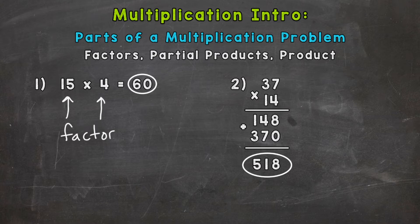So the numbers you multiply together in order to get an answer are the factors. Now the 60, or any answer to a multiplication problem, this is our product. So the 60 there is our product.